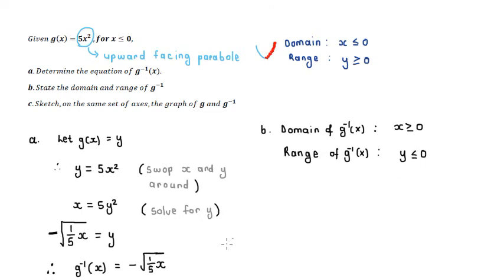If we check: the domain of the inverse function means we're plugging in x values greater than or equal to zero, so we only plug in positive values, meaning we have a positive value underneath the square root. So all is good.